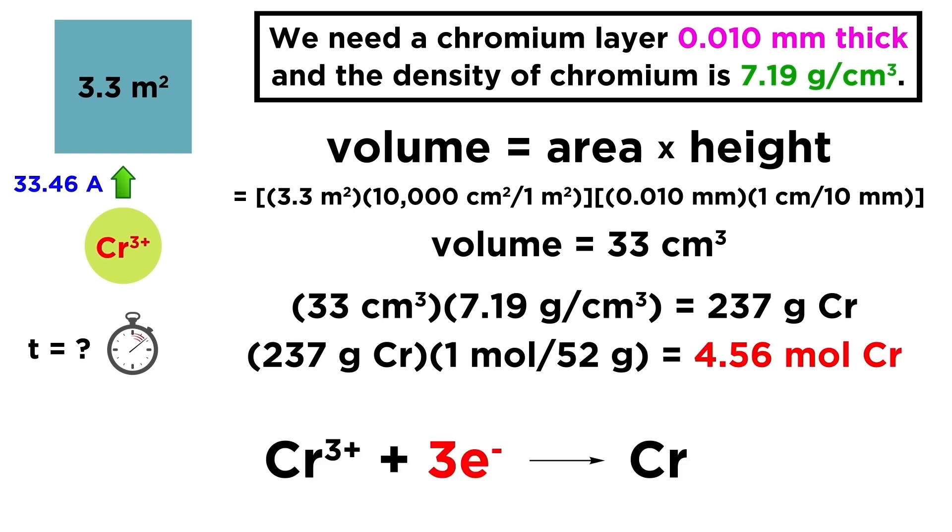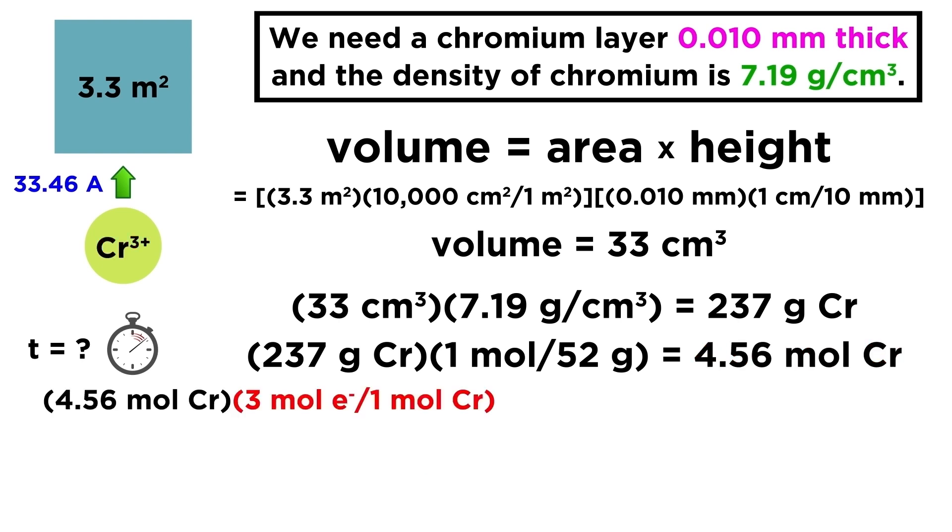Now, each chromium atom will need 3 electrons to go from chromium 3 to a neutral chromium atom. So let's take this number of moles and multiply by 3 to get the number of moles of electrons needed to reduce all these chromium ions. And from moles of electrons, we just multiply by Faraday's constant to get the charge of all those electrons in coulombs.